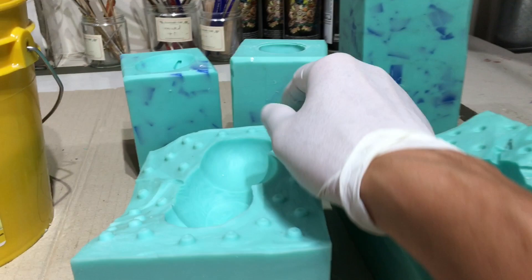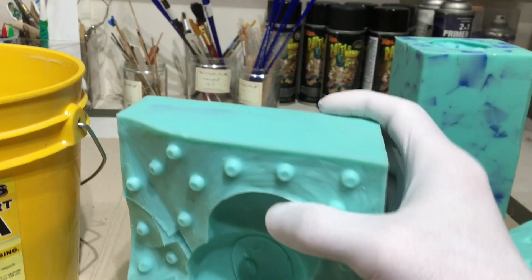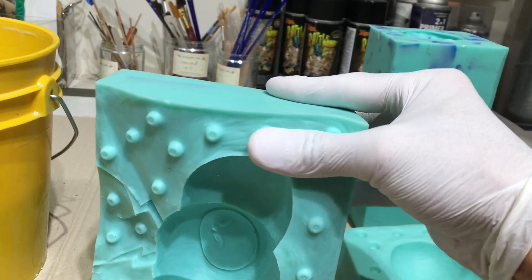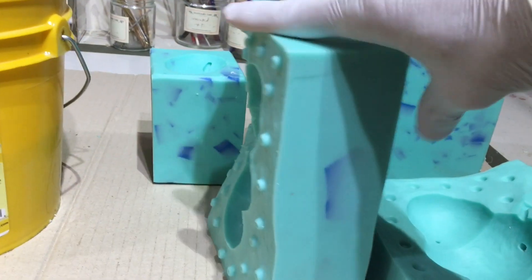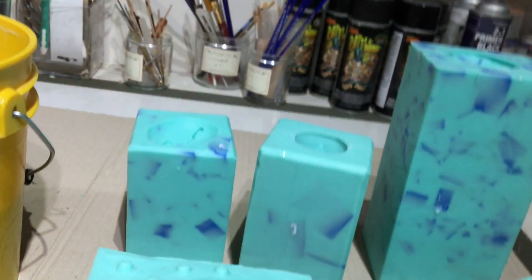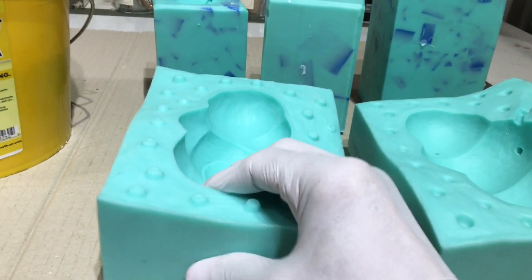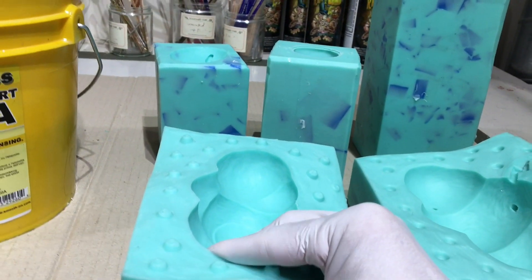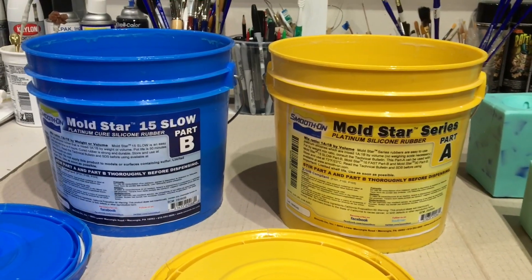And then you end up with this nice light blue flexible silicone rubber. All the little blue specks you see in the rubber, this is all recycled bits of old molds that I use to kind of conserve silicone. I'll talk about that in a little bit. This is a gallon kit.